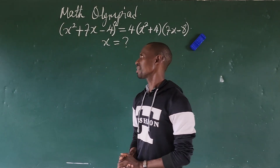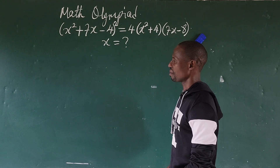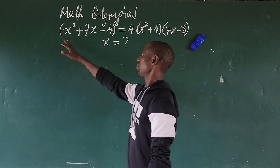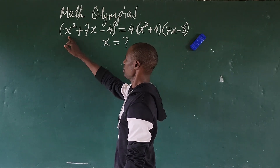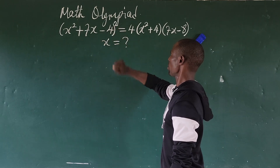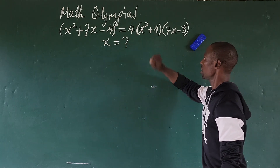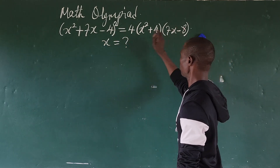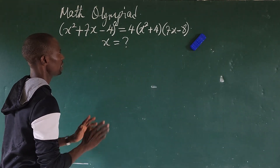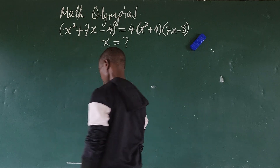Hello everyone, welcome to today's class. Today we have this Math Olympiad question before us. The question reads: (x² + 7x - 4)² = 4(x² + 4)(7x - 8). What is the value of x that satisfies this equation?